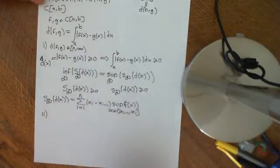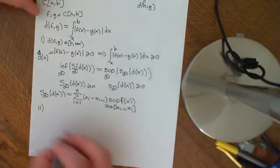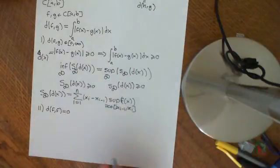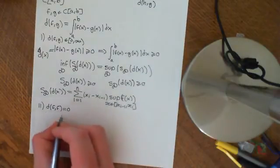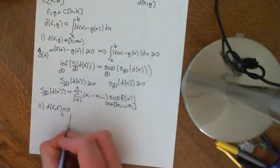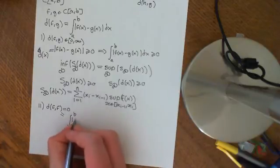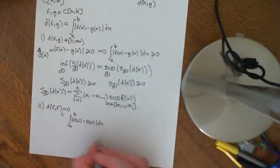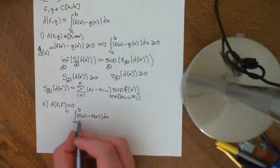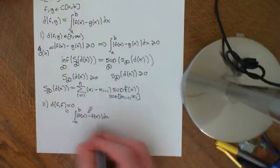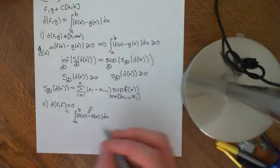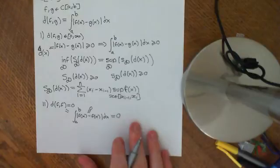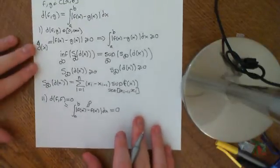Second property: the distance between F and F is equal to 0. That's pretty obvious because if we look at the definition, it's the integral from a to b of the modulus of F(x) minus F(x). F(x) − F(x) is identically 0 along [a,b], so the modulus of 0 is still 0, and we're integrating 0. The area under that curve is equal to 0. It's easiest to see these properties by thinking of the integral as the area under the curve.